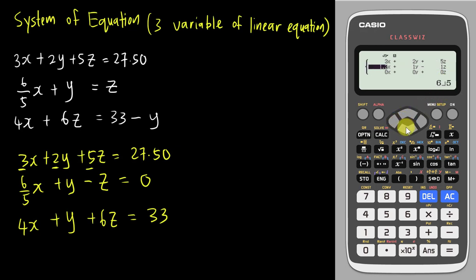My x here will be 4, my y here is 1, my z here will be 6, and then the last one will be 33.